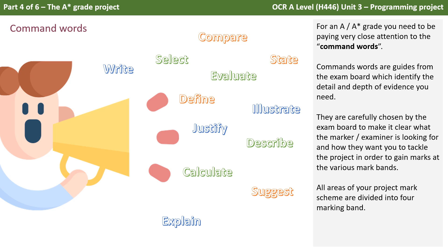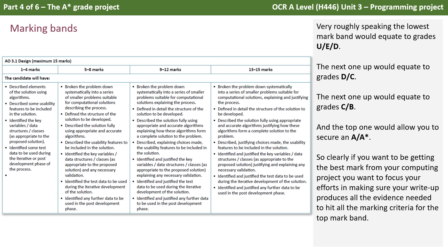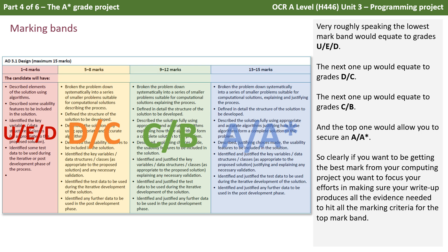All areas of your project mark scheme are divided into four marking bands. Very roughly speaking, the lowest of the four mark bands would equate to the grades U, E and D. The next one up is around D to C. The third one would be C to B, and the top mark band typically exemplifies A to A-star style work. So clearly if you want to be getting the best mark from your computing project, you want to focus your efforts on making sure your write-up produces all the evidence needed to hit all the marking criteria for the top mark band.